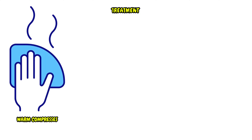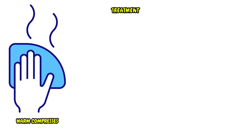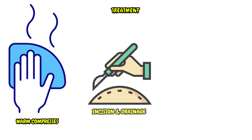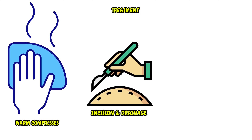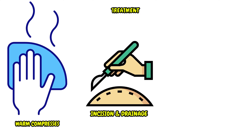Treatment for furuncles usually involves applying warm compresses to the affected area to encourage drainage and alleviate pain. In some cases, incision and drainage of pus may be required, especially if it is large or does not respond to conservative treatment.